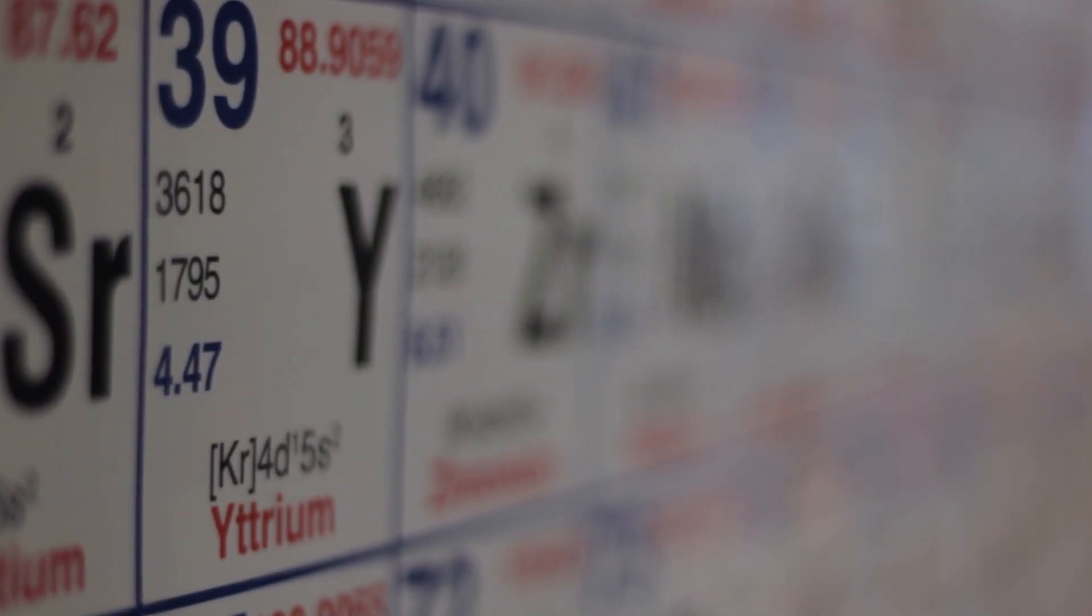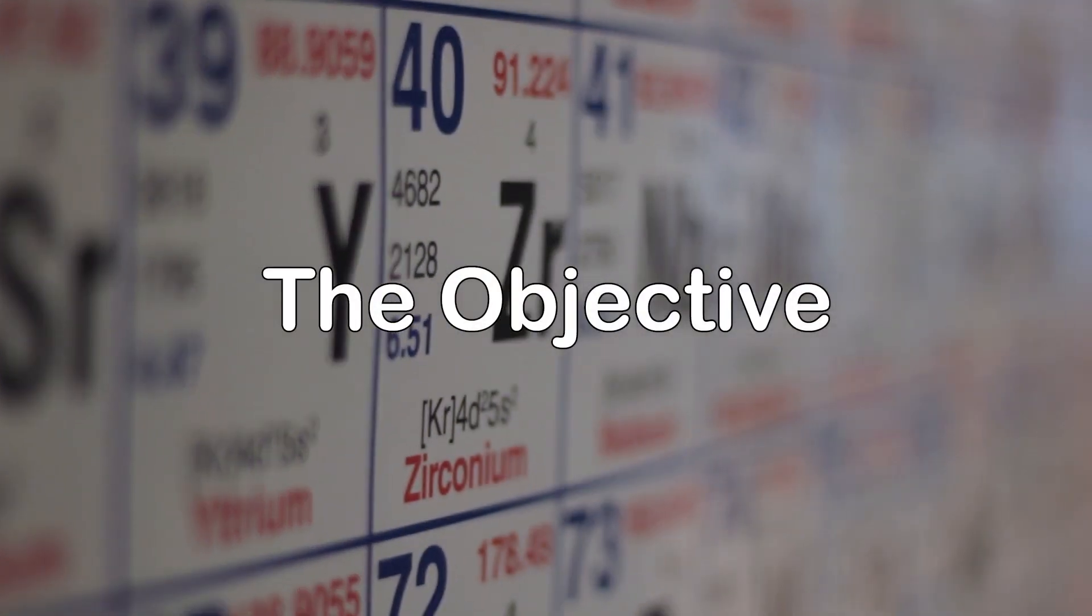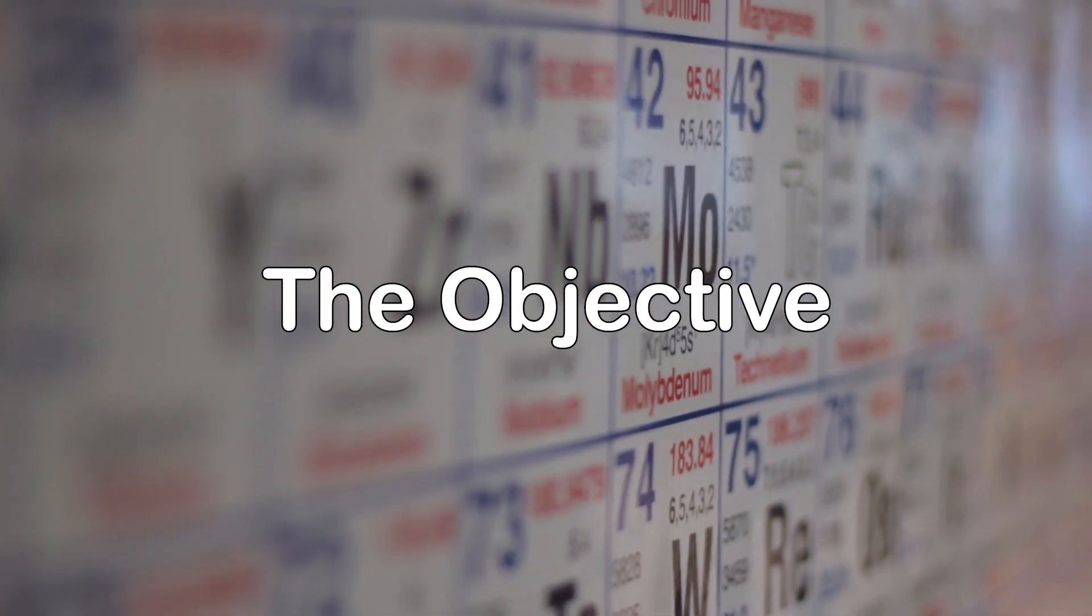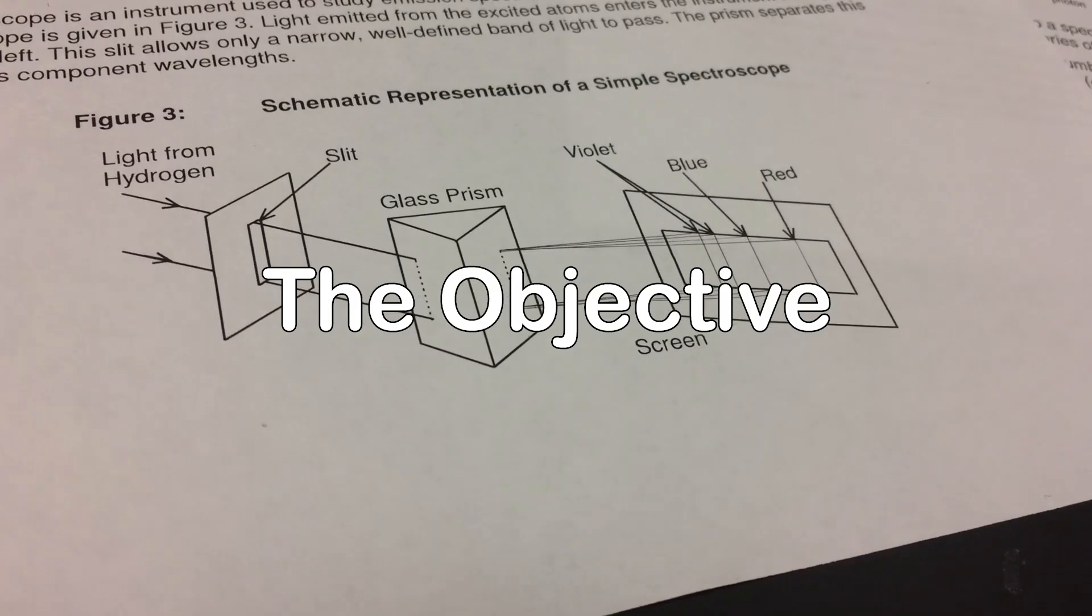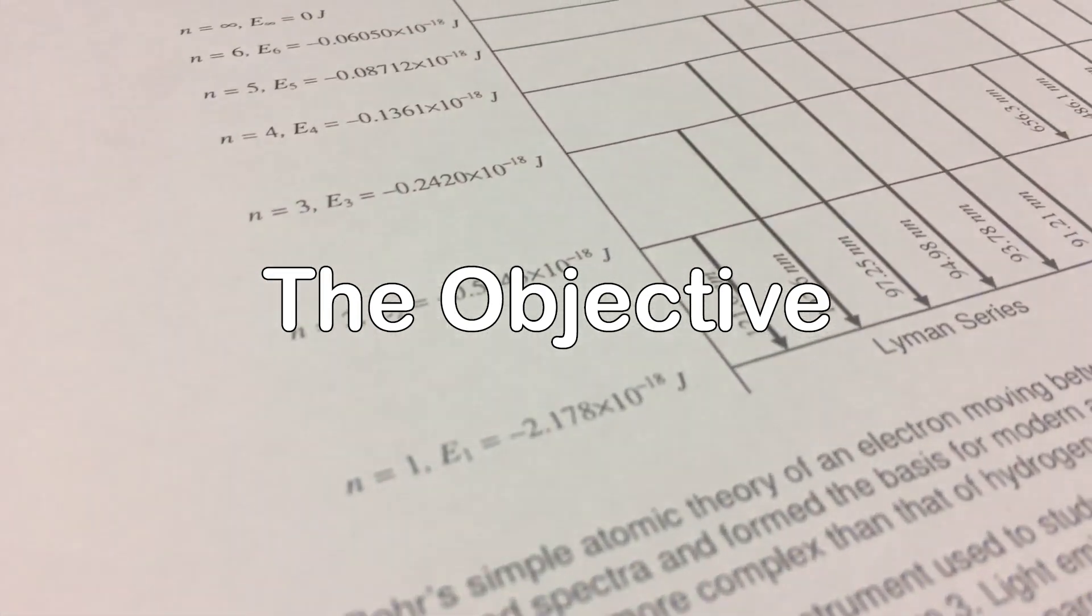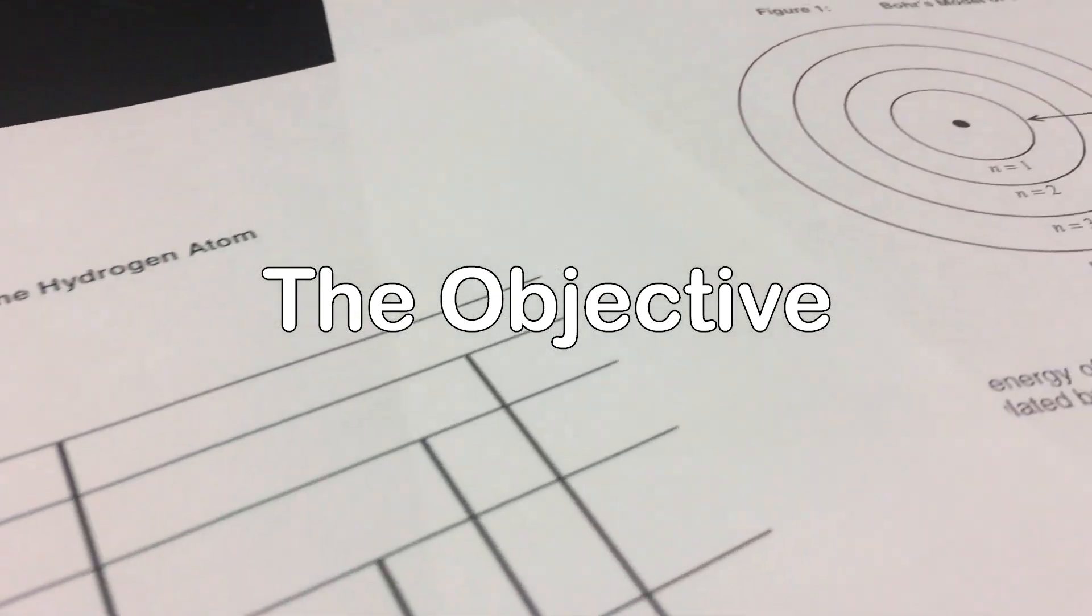Atomic Emission Spectra. A spectroscope is calibrated by viewing the known spectrum of helium. This calibration is used to determine the wavelengths of the visible spectral lines of the hydrogen atom. Finally, the observed spectral lines are related to specific energy transitions in the hydrogen atom.